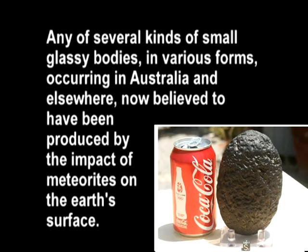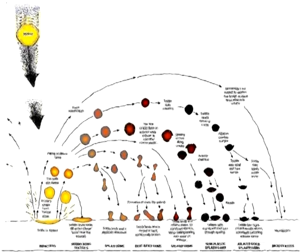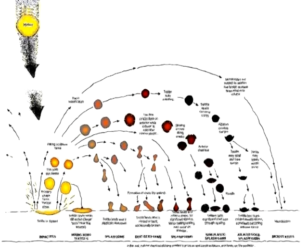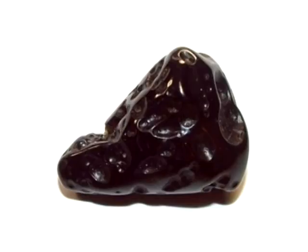Tektite: any of several kinds of small glassy bodies in various forms occurring in Australia and elsewhere, now believed to have been produced by the impact of meteorites on the Earth's surface. Most scientists believe that tektites are molten glass produced during meteoroid impact with the Earth. The glass is then hurled back into space by the collision where it solidifies and then falls back down to Earth. At least, that's what most scientists believe.